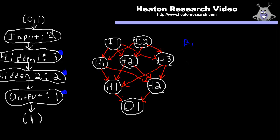So B1, B1, and B1. So the bias is going to be fully connected as well. It goes to every single neuron in the next layer. So you can see that the biases do not have any input coming into them. They're not fed from the previous layer. They all have a value of one.